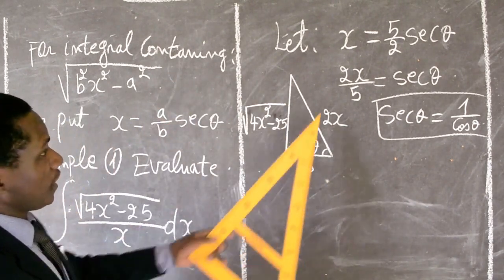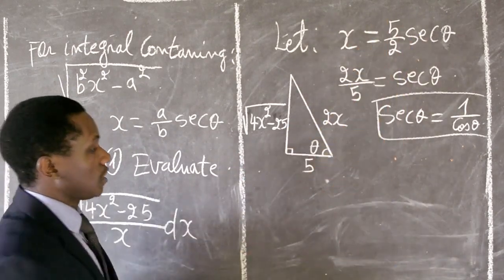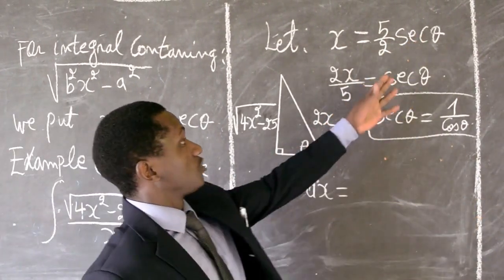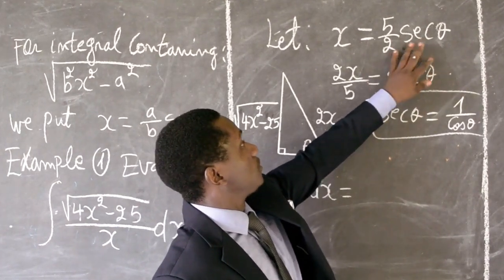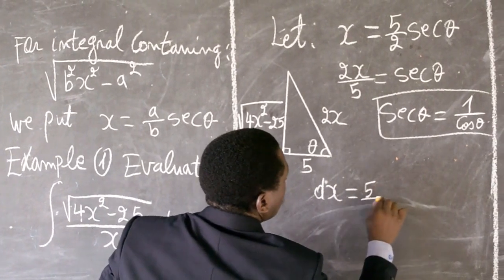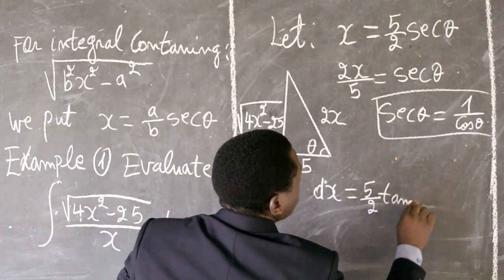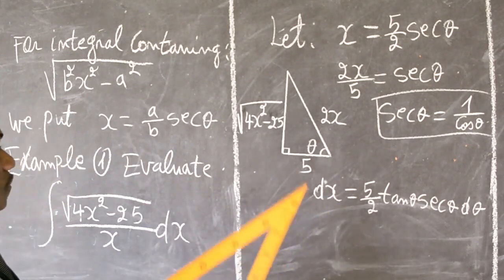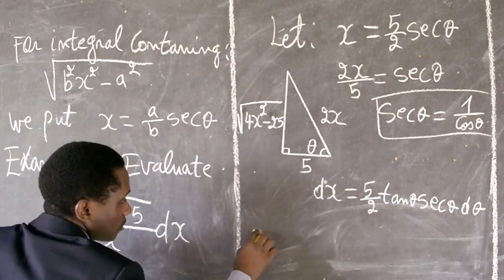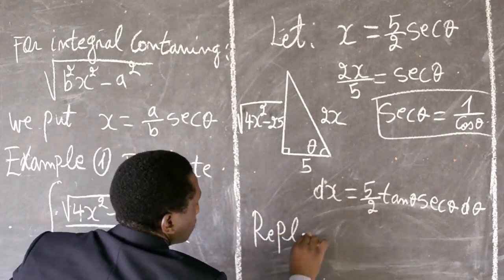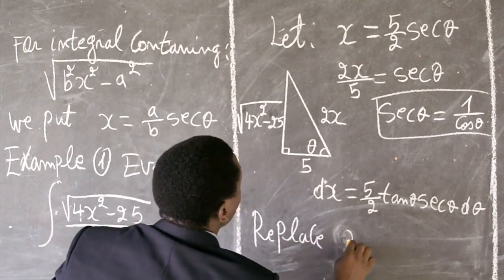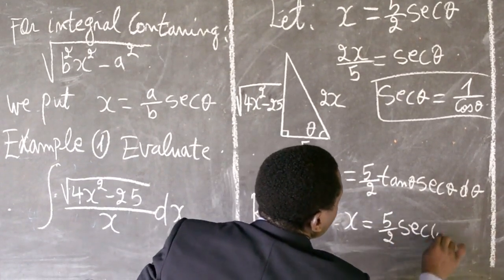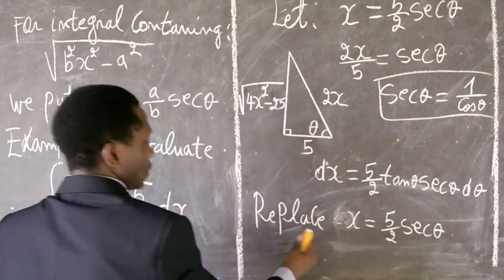We continue by finding dx in terms of dθ. We need to differentiate sec θ: the differentiation of sec θ gives tan θ sec θ. So we get dx equals (5/2)tan θ sec θ dθ. From here, we can replace x = (5/2)sec θ into our integral.